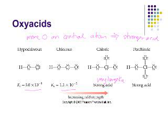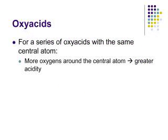For a series of oxy acids with the same central atom, more oxygen around the central atom means greater acidity. More oxygen means a stronger acid. That's the key statement here.